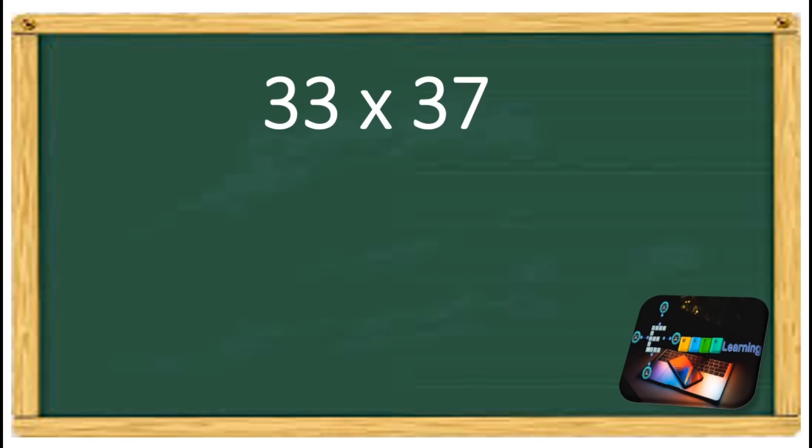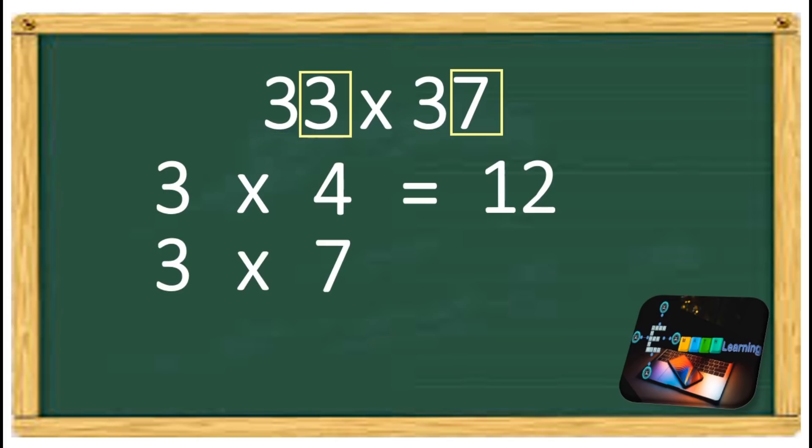Take the tens digit and multiply it by the next higher number. 3 times 4 equals 12. Then multiply the ones digits. 3 times 7 equals 21. So the answer is 1,221.